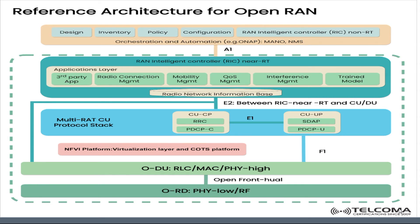As shown in the architecture diagram, orchestration and automation components — ONAP, MANO, and MnS — are connected with the Radio Network Information Base via the A1 interface. The non-RT RIC is connected to the near-RT RIC via A1. The E1 interface runs between CU-CP and CU-UP, the E2 interface is between the O-DU and the RIB, and the open fronthaul interface is between the O-DU and the O-RU.